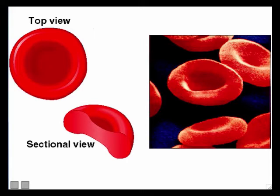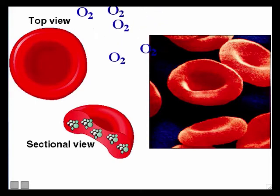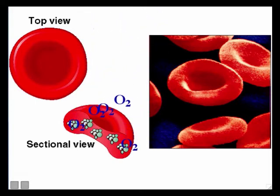Red blood cells have no nucleus and are stuffed full of a protein called hemoglobin, which is what lets the red blood cell hold the oxygen. The hemoglobin proteins inside the red blood cell actually carry the oxygen. Oxygen naturally sticks to hemoglobin — it's almost like a magnetism between hemoglobin and oxygen. That's how red blood cells carry oxygen on the hemoglobin proteins.